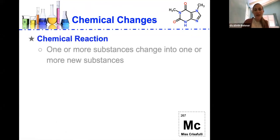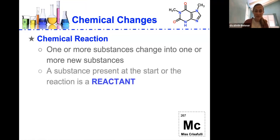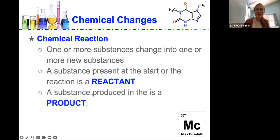In a chemical reaction, one or more substances will change into one or more new substances, and the substance present at the start of the reaction is called the reactant, and that's really important to remember. The substance produced at the end of the chemical reaction is called the product. So in a chemical reaction, we start with reactants, that's the substances we start with.